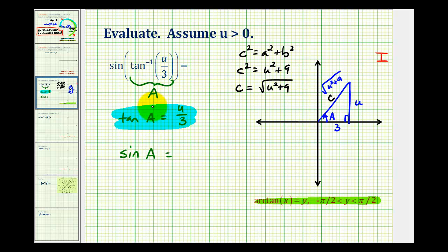So now that we've modeled angle A using this reference triangle, we want to determine the sine of this angle A. Well, the sine would be the ratio of the opposite side to the hypotenuse. So we'd have u all over the square root of u squared plus nine.